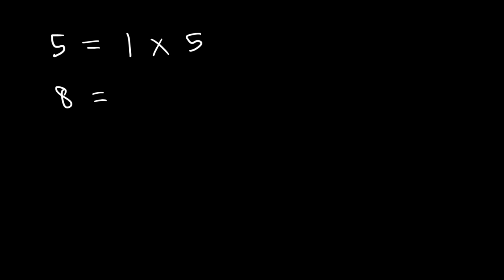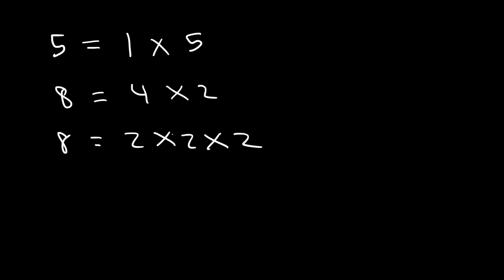A composite number like 8 can be broken up into two prime numbers or more. You can break up 8 into 4 and 2, and 4 can be broken down into 2 and 2. So as you can see, 8 is made up of multiple prime numbers. Eight is a composite number. This is known as the prime factorization of 8 — you break it down into a product of prime numbers that multiply to 8.